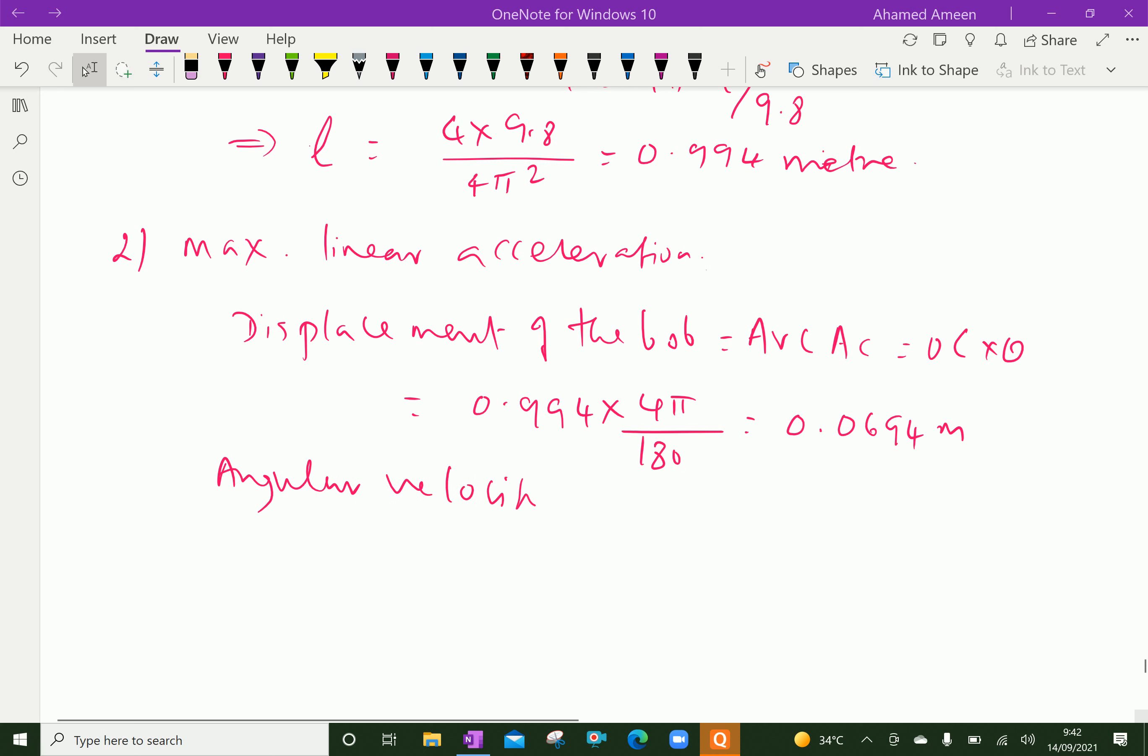Which equals 0.0694 meter. From that angular velocity you can find, angular velocity omega equal to 2π by time period which equals 2π by 2, that is 3.14 radian per second.